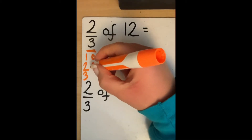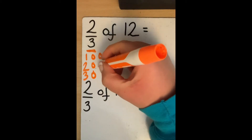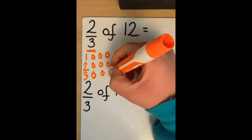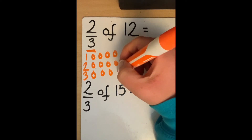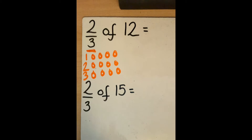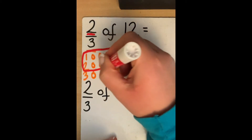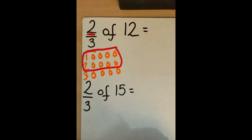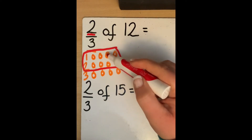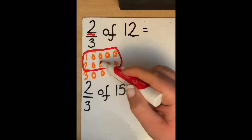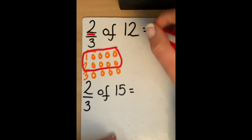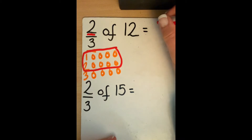Then we need to share our 12, just like we did last week, equally between those 3 groups — counting out all 12. Now this is where it changes from last week. This time we need to look at the numerator, which tells us we need to count 2 groups. Counting those 2 groups gives us 8. So 2 thirds of 12 is 8.